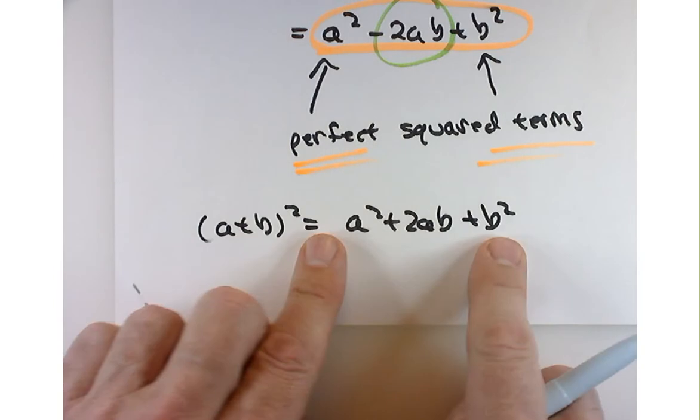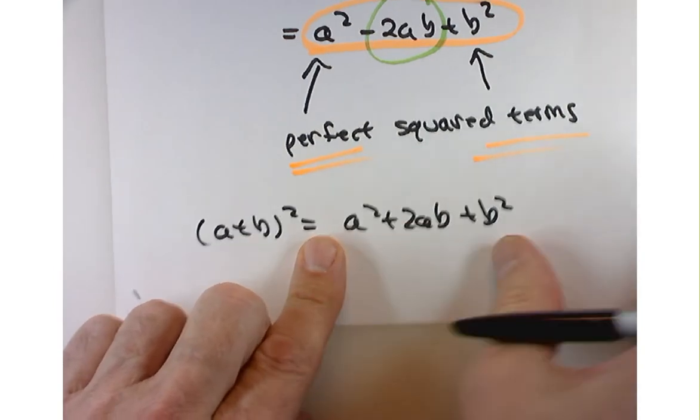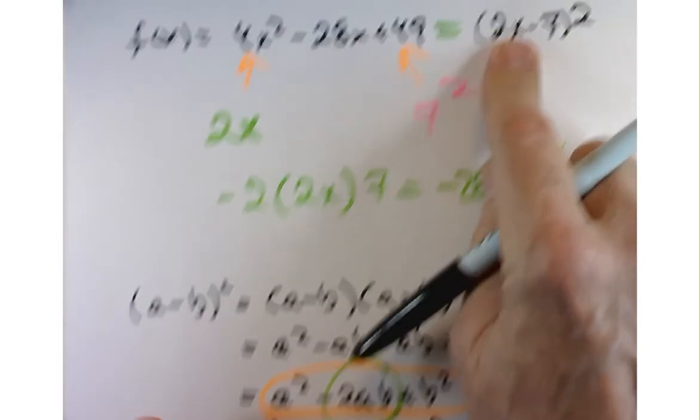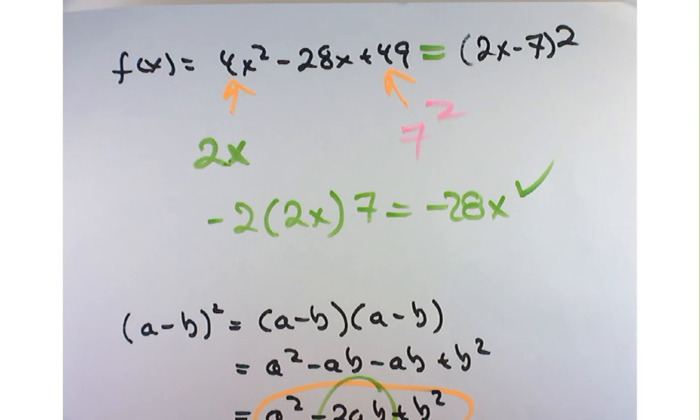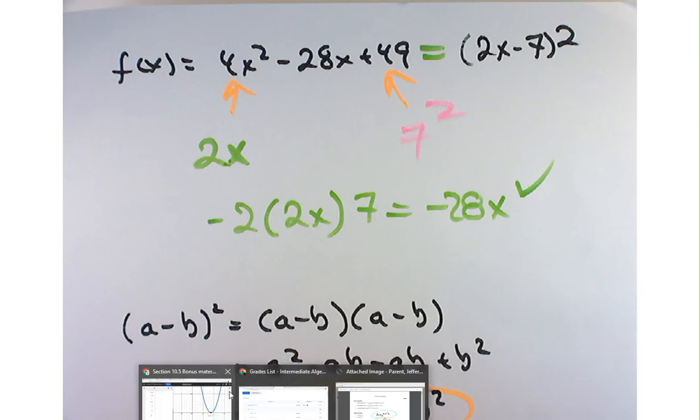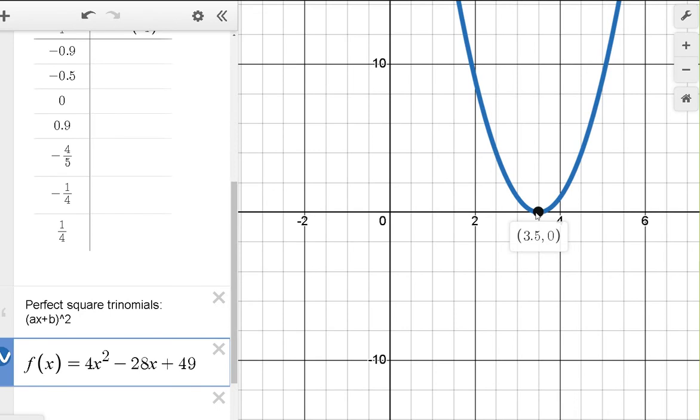But if these end terms are squared, check to see that the middle term fits this. In fact, if you get this kind of a nice bouncing behavior off the x-axis, where the graph just touches the x-axis once, then chances are exactly what you have is a nice perfect square trinomial there.